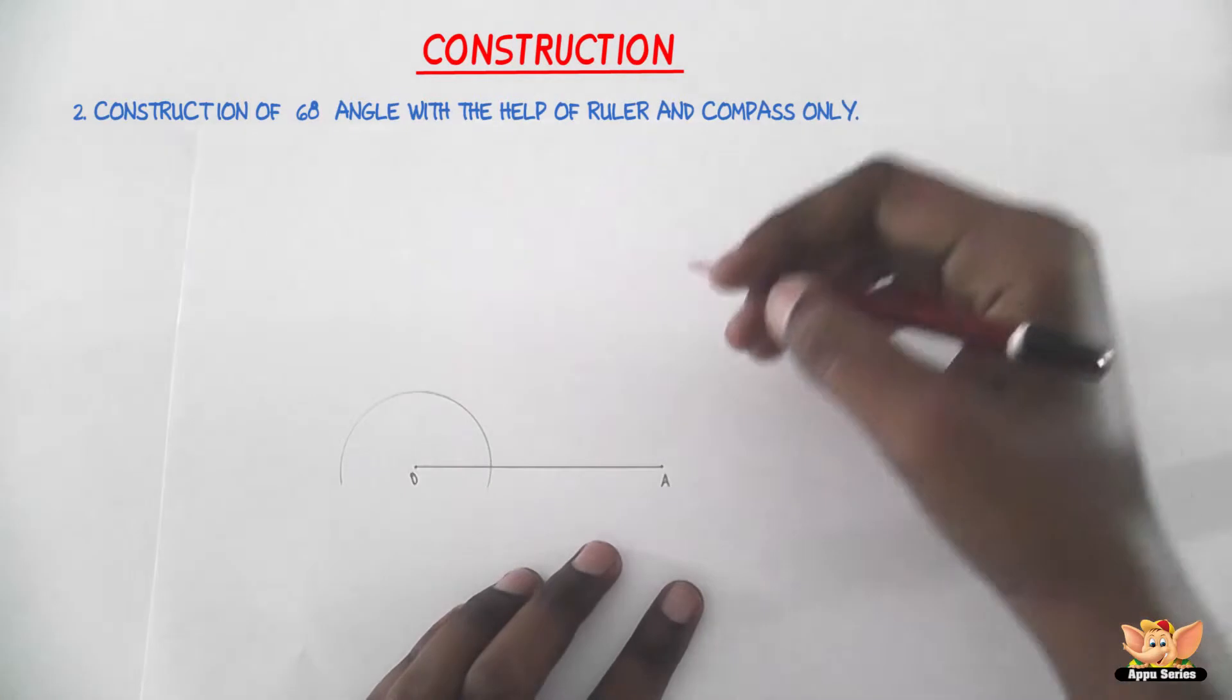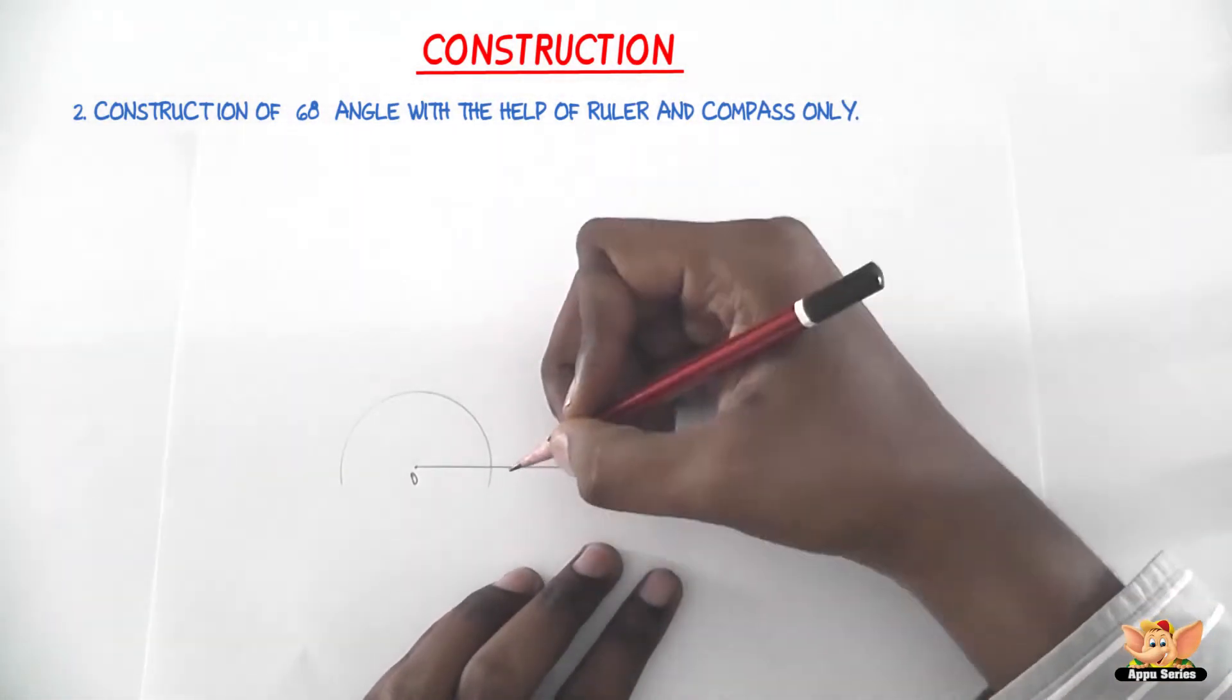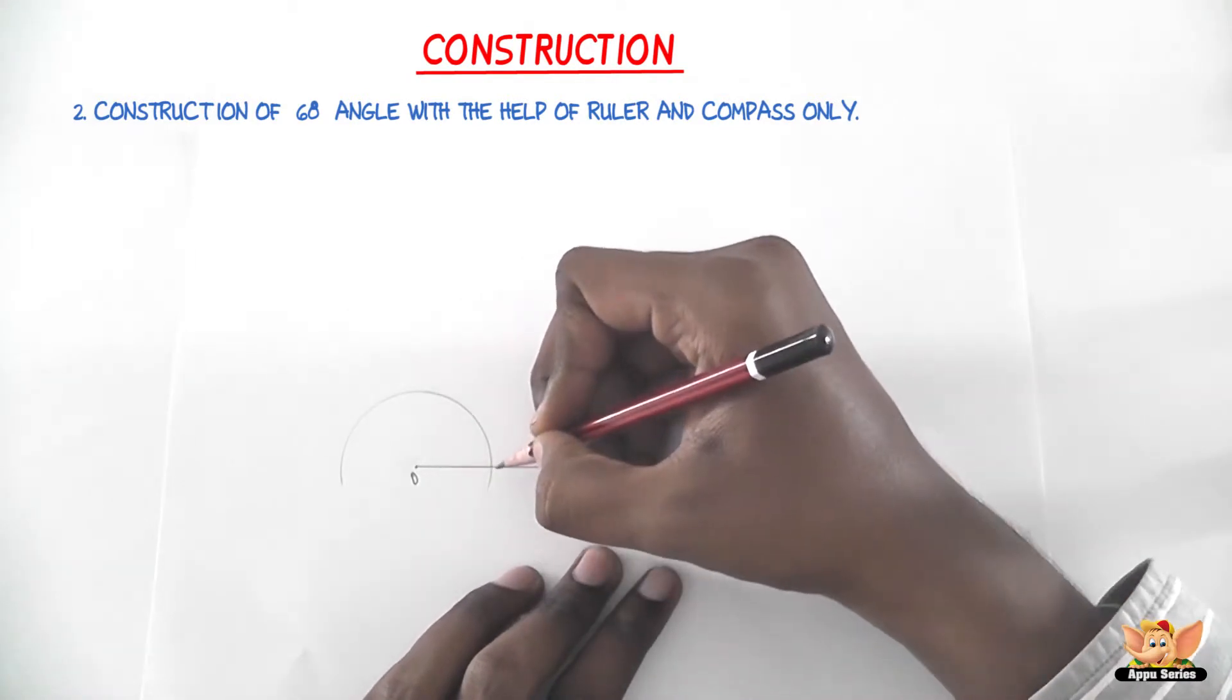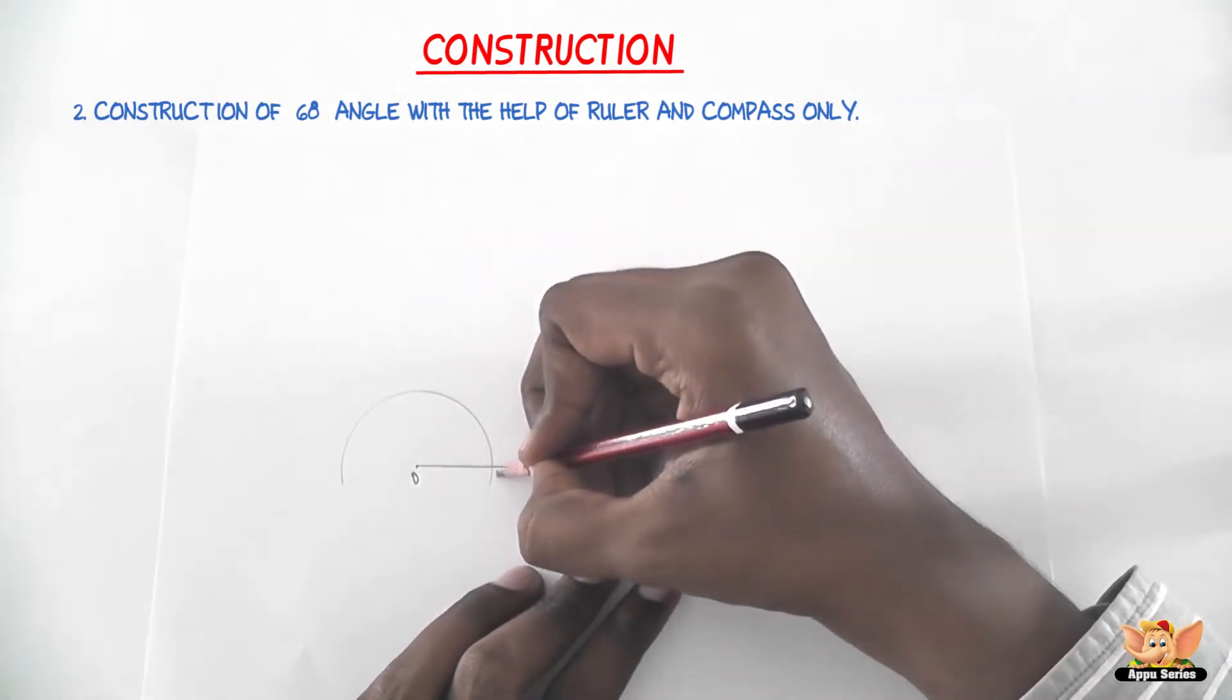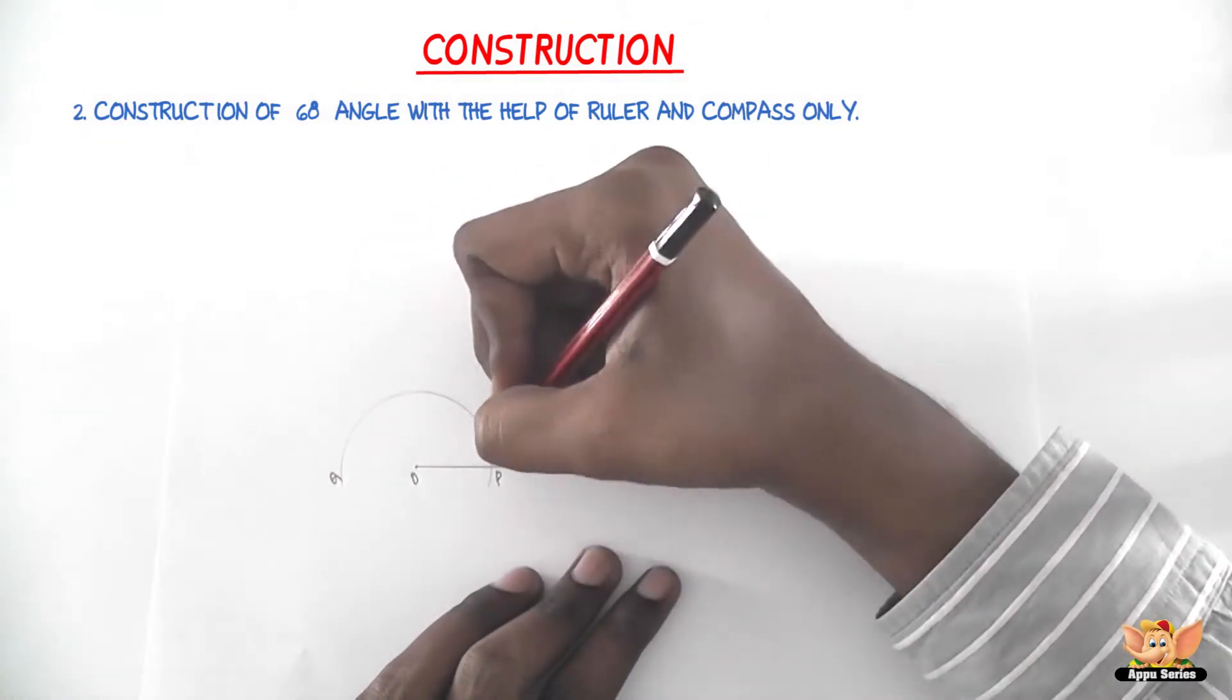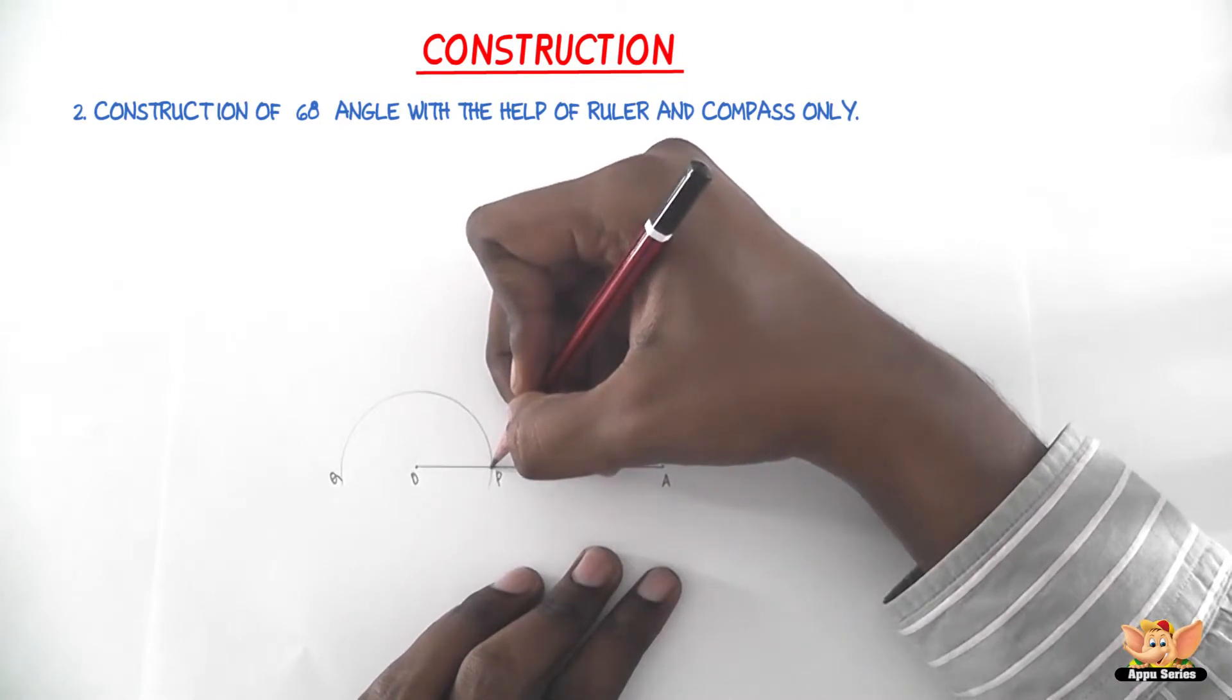So now I've drawn an arc PQ. This is P and this is Q. So an arc PQ intersecting OA at P, this is the point P. That's the second step.